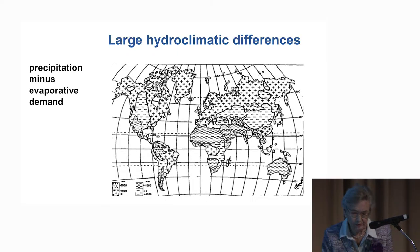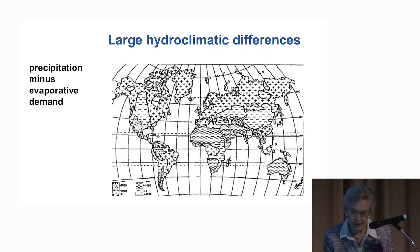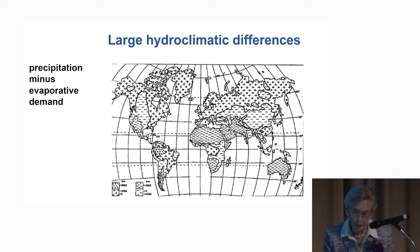There are large hydroclimatic differences between different regions of the world. This map shows the difference between precipitation and evaporative demand, or thirstiness of the atmosphere. Plus signs indicate that precipitation is larger and runoff is produced, while minus signs indicate an arid climate where evaporative demand dominates. North America, South America, Europe, and Northern Asia are dominated by plus signs, meaning they are humid, whereas Australia and Africa are dominated by minus signs — the continents with arid climates.